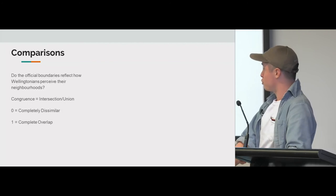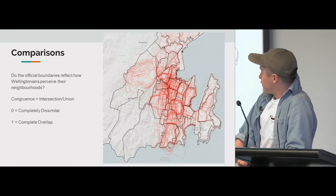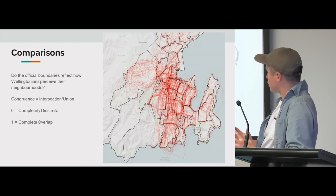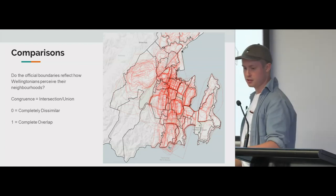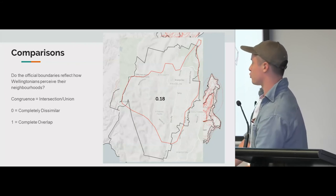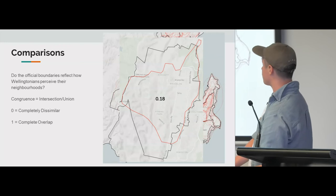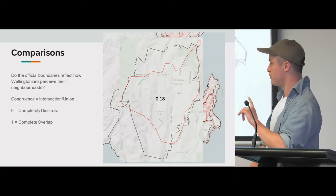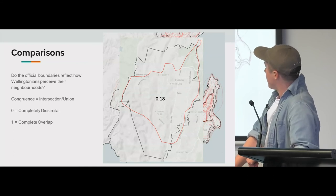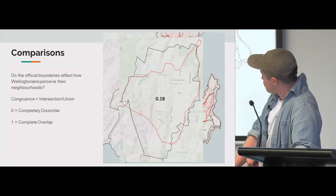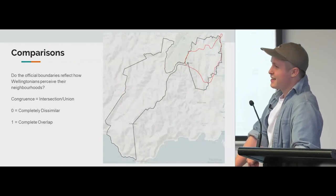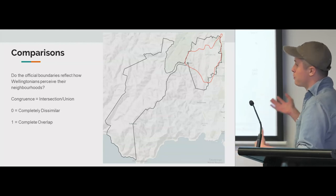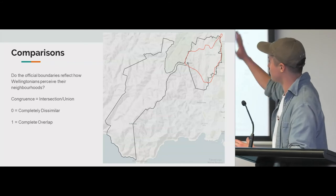I was also interested in comparing neighbourhoods to official boundaries. In black are the fire service's official suburb boundaries and in red are mine. You can see some areas where there is overlap and some where they match quite well. I'm using a measure of congruence — the intersection between two polygons divided by the union. Zero means completely different, one means completely alike. For the Brooklyn neighbourhood, the congruence was 0.18, which is a bit strange because they look quite similar locally, but when you look at the big picture they're very different. That raises the question of how representative the official boundary is of people's experiences.